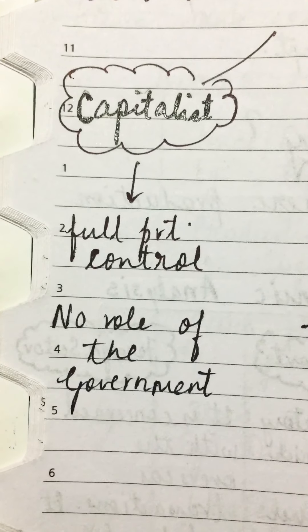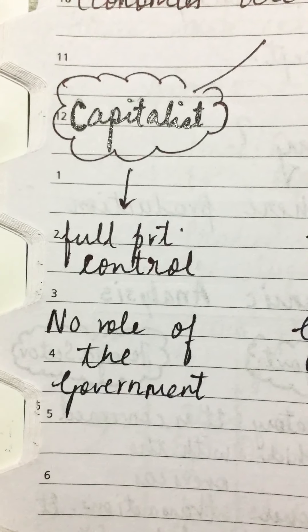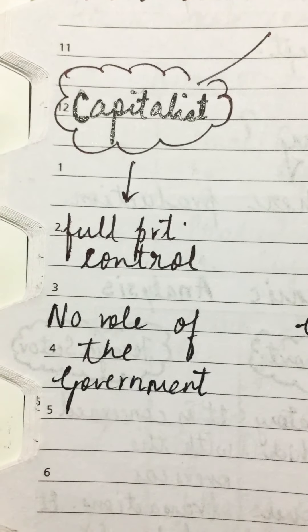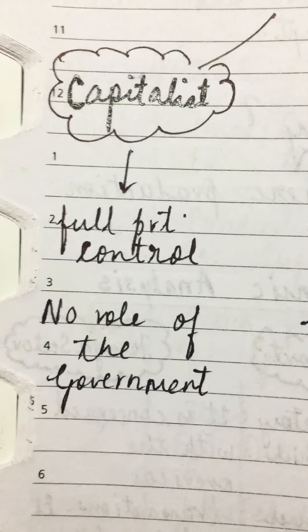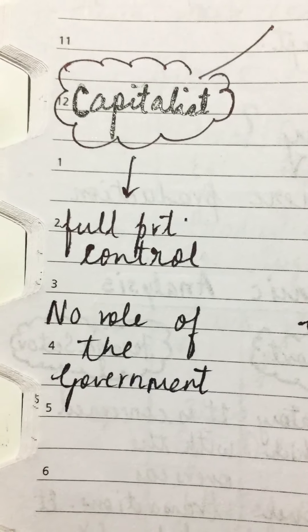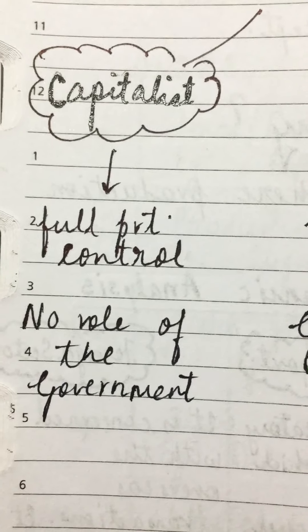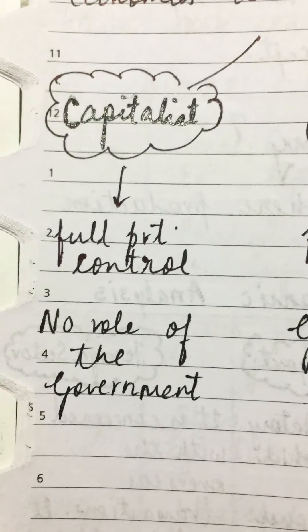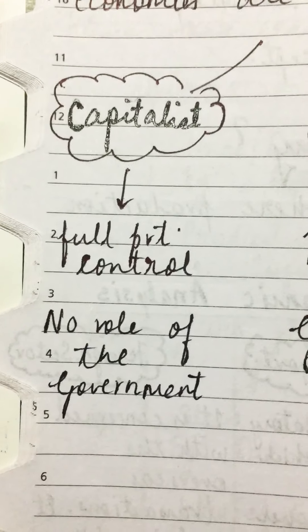There are some merits: there is more production, good utilization of resources, and technological progress because there is full private control. There is incentive for hard work - if people do hard work, workers get bonuses. There is a free economy because there is no control over production, and there is a higher standard of living.